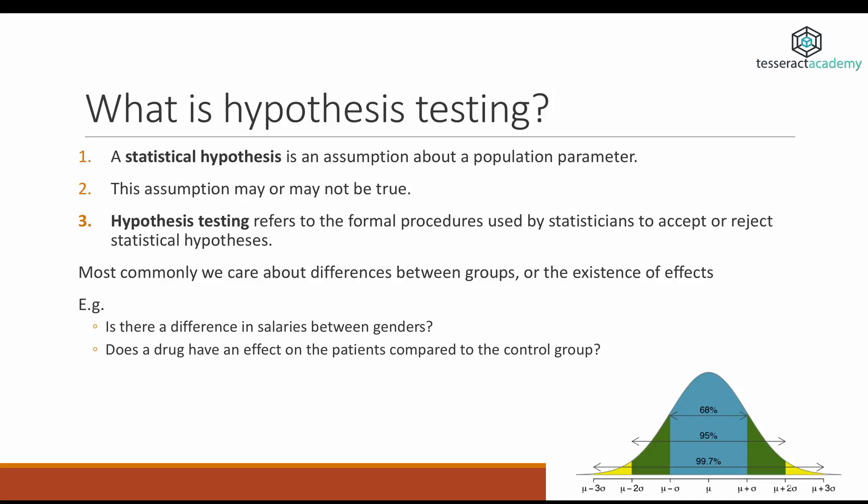What is hypothesis testing? A statistical hypothesis is an assumption about the population parameter, such as the height of men in the United Kingdom is around 190 centimeters, or the median income in some other country is $45,000. This assumption may or may not be true. A hypothesis test is a formal procedure that we're using in order to accept or reject the statistical hypothesis.